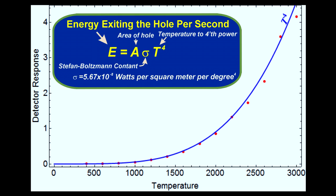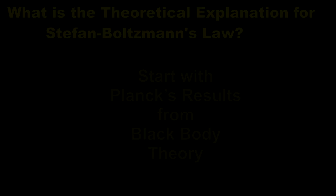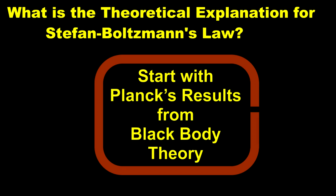It had no theoretical explanation. Theoretical physicists now had the task of explaining the law in terms of basic principles. The theoretical explanation came as an immediate result of Planck's blackbody theory.